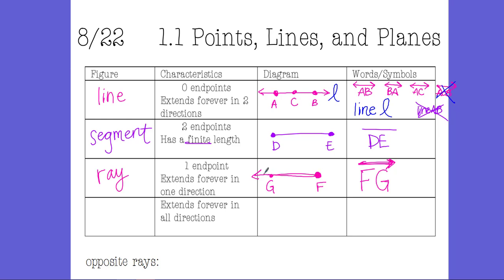The thing that stresses students out is: the ray in the picture goes toward the left, but when you write it symbolically, the ray symbol points to the right. Why is that?